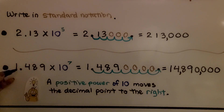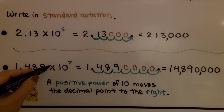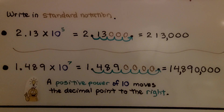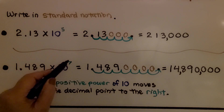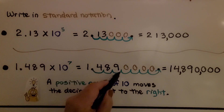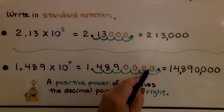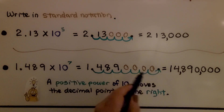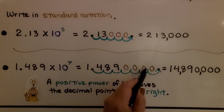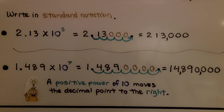Here we have 1.489 times 10 raised to the seventh power. We move the decimal point to the right seven times — 1, 2, 3, 4, 5, 6, 7. We only need four placeholder zeros, and we get 14,890,000. A positive power of 10 moves the decimal point to the right.